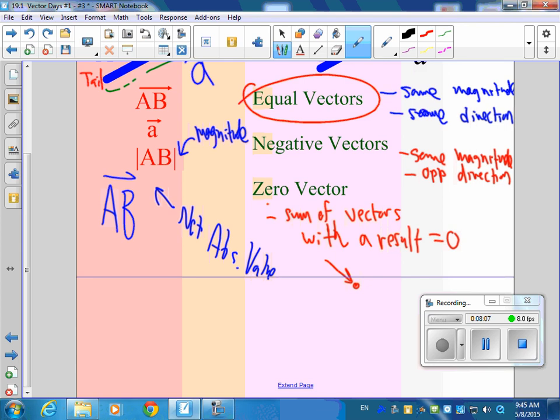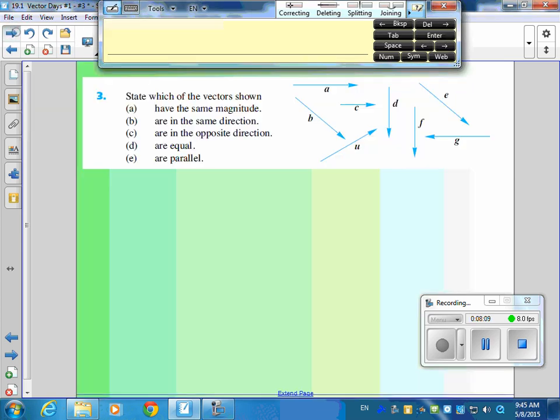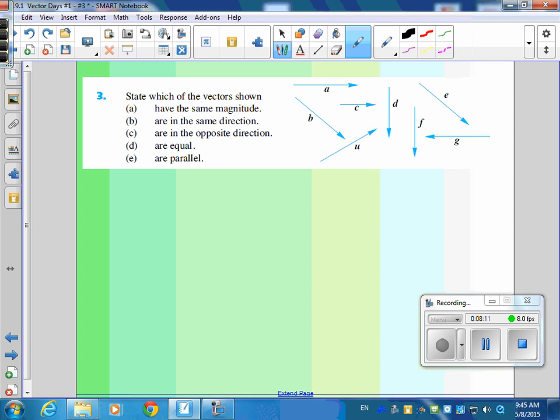So if you go to the next slide, state which vectors have the same magnitude. So for part A, can you tell me anything that has the same magnitude as vector A? What's that? G. Good. Anything else? I think so.